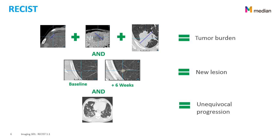In the last image, you can see the progression of non-target lesions — called non-target since they are too small to be studied quantitatively, but they are checked qualitatively. If there is unequivocal progression, the patient is classified as progressive disease (PD).